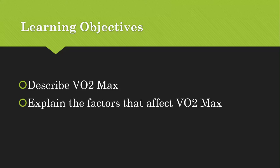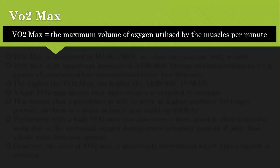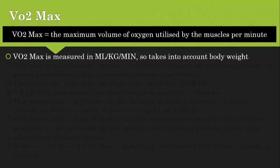Just a reminder of what VO2 max is: it's the maximum volume of oxygen that can be used up and utilised by muscles per minute or per unit of time, and it's measured in millilitres per kilogram per minute, so it takes into account a person's body weight.